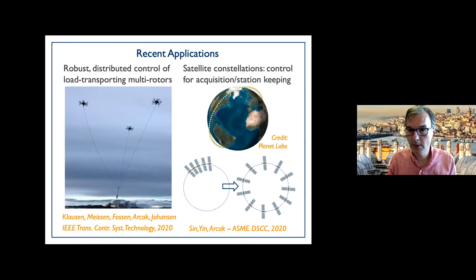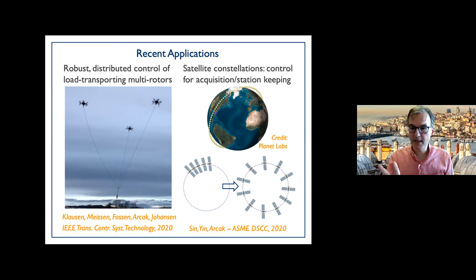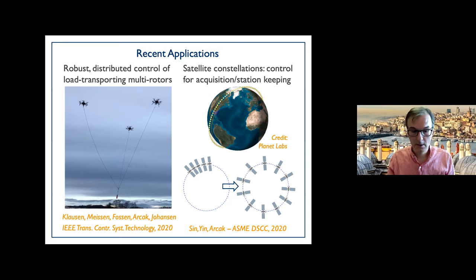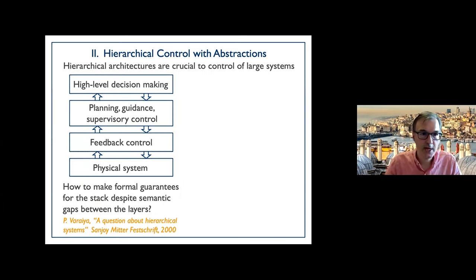The other application was to satellite constellations. Companies like Planet Labs in San Francisco use hundreds of satellites in low Earth orbit for Earth surveillance. The goal is to bring these satellites to a 'splay state' — evenly distributed — so they cover a larger swath of the Earth. We use dissipativity-based controllers for both the acquisition phase (reaching the splay state) and station keeping (maintaining it despite disturbances). These are structured distributed controllers that rely only on information from neighboring satellites.